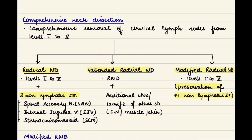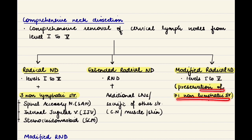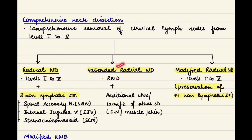Modified radical neck dissection means that along with removal of level 1 to 5 lymph nodes, at least one non-lymphatic structure is preserved. So to summarize: radical — all five groups removed along with all three non-lymphatic structures; extended radical — radical plus removal of additional structures; modified radical — levels 1–5 removed but at least one of the three non-lymphatic structures is preserved.